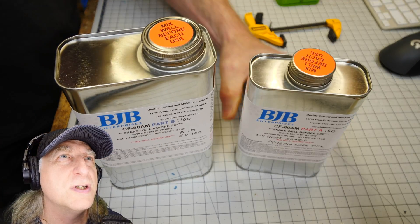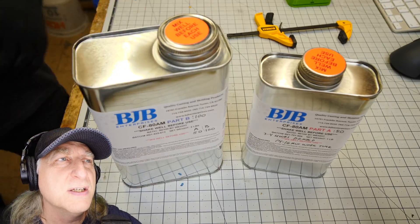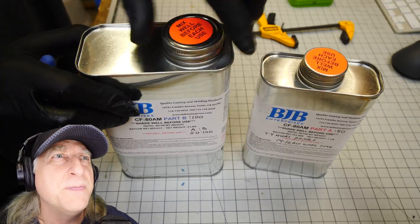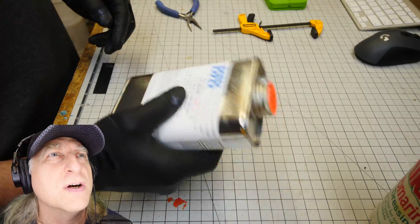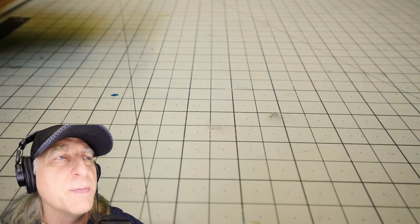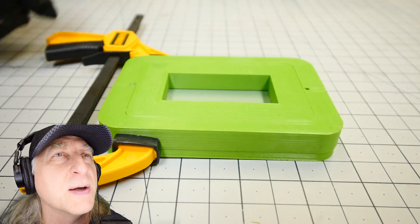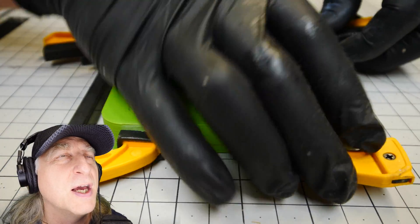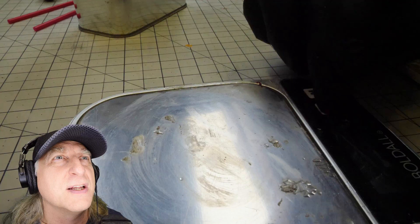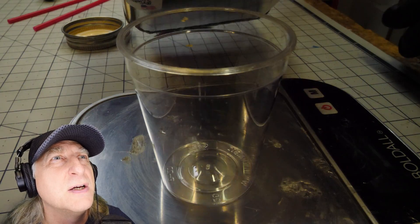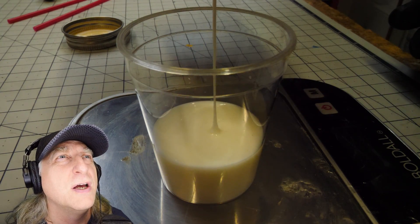We're going to use the BJB CF 80 AM. It's a 50 to 100 ratio, very easy to mix, working time of about 14 to 16 minutes. I really love that working time. It gives me plenty of time and if you're just making one or two parts, that's a dream time to have to work and mix up your material.